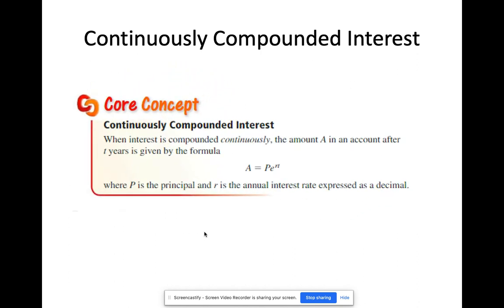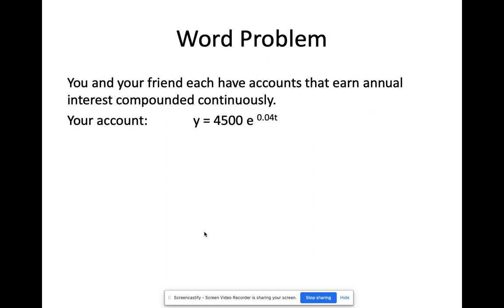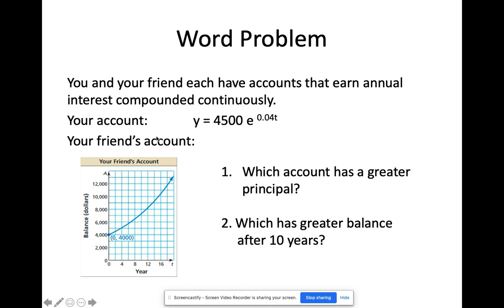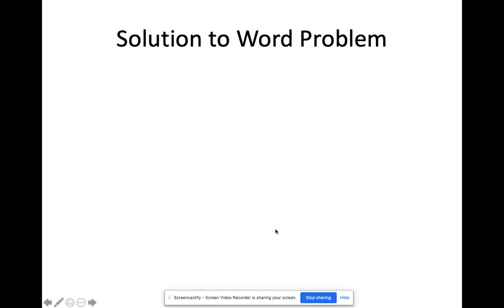Let's have an example. So that's one from the book. So it's r, it's principle, r is the annual interest rate expressed as a decimal. So let's have a word problem. You and your friend have accounts that earn annual interest compounded continuously. So this is your account. It has this formula, 4500e^(0.04t). Next one, your friend's account. It's expressed in terms of a graph. So based from this, let's answer two questions. First question, which account has a greater principle? Is it you or your friend? And then after 10 years, which has a greater balance? Is it you or your friend?